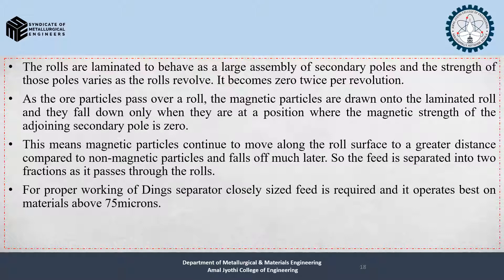As the ore particle passes over a roll, magnetic particles are drawn onto the laminated roll and fall down only when at a position where the magnetic strength of the adjoining secondary pole is zero. This means magnetic particles continue to move along the roll surface to a greater distance compared to non-magnetic particles and fall off much later. Thus the feed is separated into two fractions. For proper working of the Dings separator, closely sized feed is required and it operates best on materials above 75 microns.